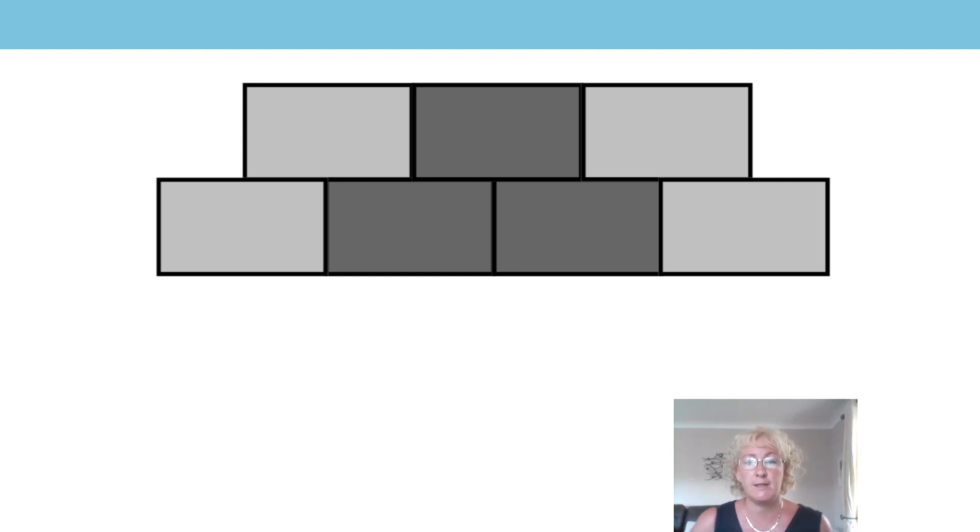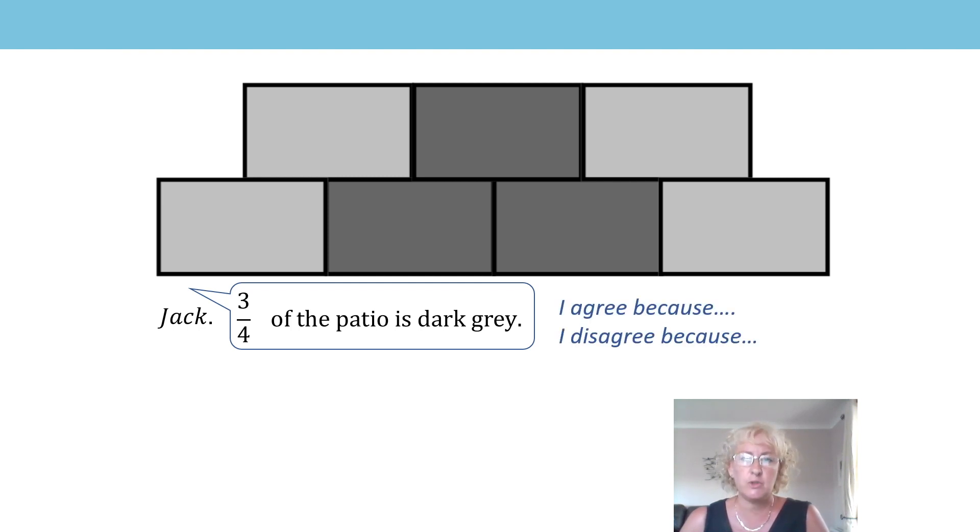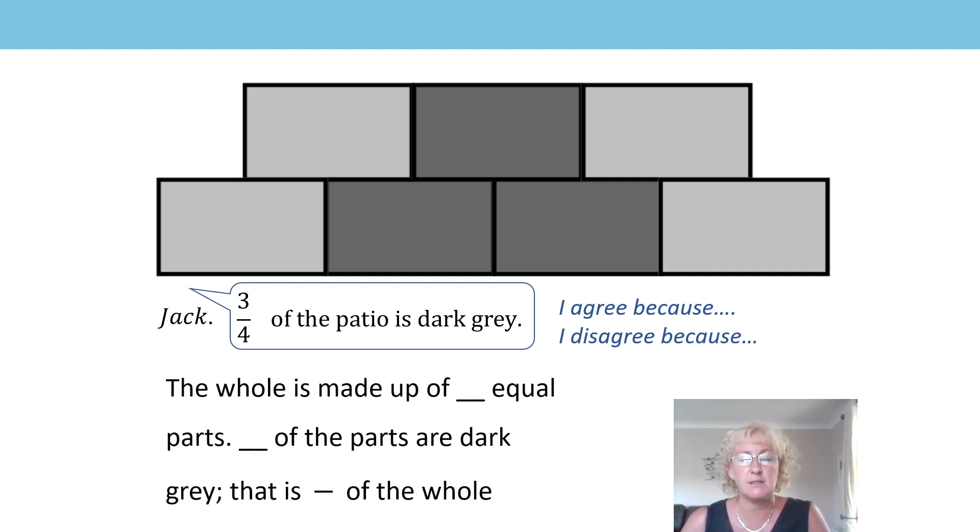Another job I've been busy with this week is laying a patio and I've used some light paving slabs and some dark paving slabs to make this design. Now, Jack says that three quarters of the slabs are dark grey. Let's run through it. The whole is made up of seven equal parts and three of the parts are dark grey. So that is three sevenths of the whole. So Jack is wrong. Well done. Did you get that?